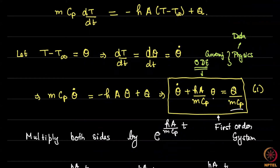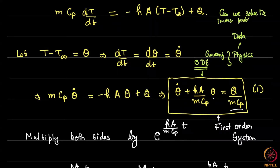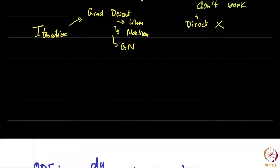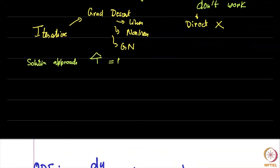Now imagine we don't know how to solve this ODE — as would be the case for Burgers' equation or Navier-Stokes. The question is: can we solve the inverse problem without explicitly solving the ODE? The answer is yes. The solution method is to assume that T-hat is a neural network — it takes in time as input, since T-hat is a function of t.